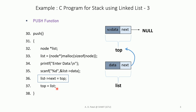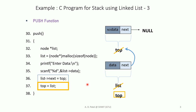After linking list to top, we set top = list, making list the new top. As we know in a stack, whenever we push an element, the latest pushed element is on top because we only access the top element. So after this line executes, list becomes the new top.